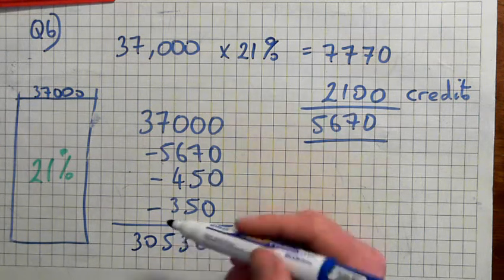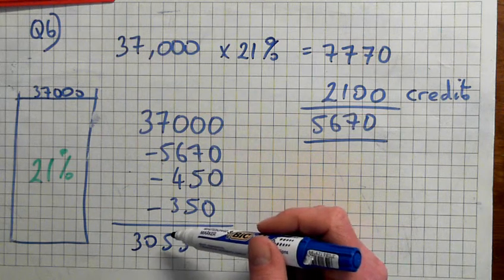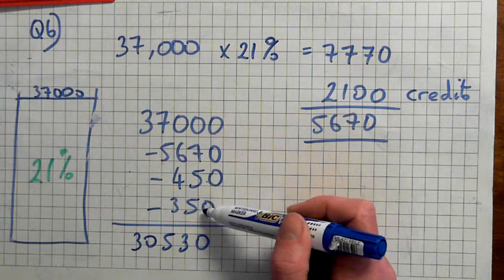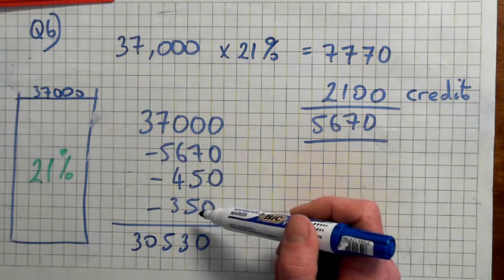Okay. So the 450, that was the union fees. It has to be taken out of the salary. And 350 was health insurance. That has to be taken out as well.